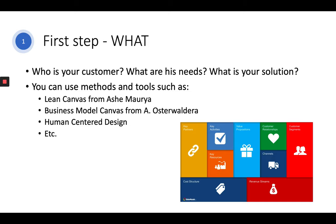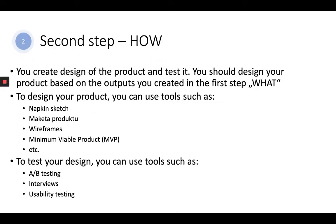When you actually know what your product looks like and what solution it brings to customers' needs and problems, you can design how you're going to do that. In this step you create a design of your product, test it against your customers, and get feedback which will help you improve your product. You should design your product based on the outputs you created in the first step.